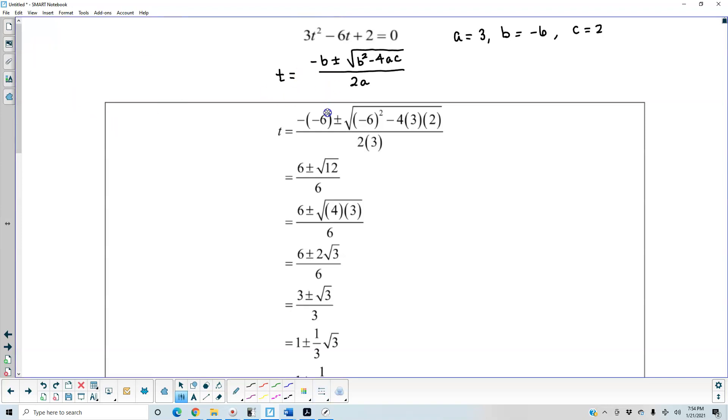So what do we do? We plug in the following values. We said that 6 is plugged in for b, and then a represents 3, and c is 2. So a negative times a negative makes this positive 6 ± √(36 - 24), which gives us 12 divided by 6.